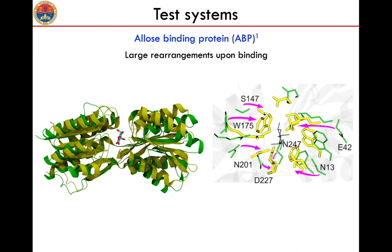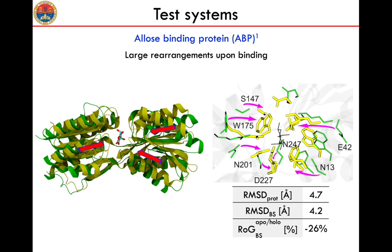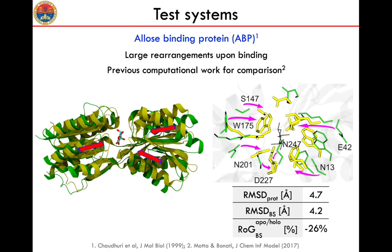The last target, also seen in the previous lecture, is the leucine binding protein. This protein undergoes even larger conformational changes upon ligand binding, amounting to a change in the binding site larger than 4 Å and a variation in the radius of gyration of the binding site larger than 25%. Also in this case we have a previous computational work for comparison: the work by Montemurro discussed in the previous lecture.